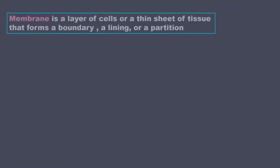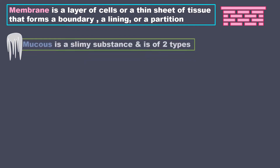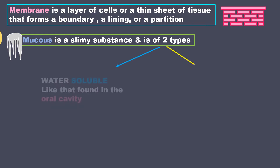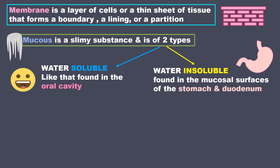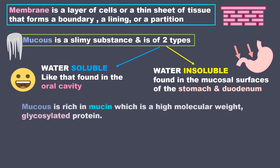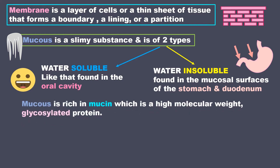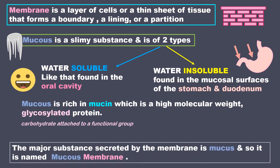A membrane is a layer of cells or a thin sheet of tissue that forms a boundary, a lining, or a partition. Mucus is a slimy substance and is of two types: water soluble, like that found in the oral cavity, and water insoluble, found in the mucosal surfaces of the stomach and duodenum. Mucus is rich in mucin, which is a high molecular weight glycosylated protein — meaning it has a carbohydrate attached to a functional group. The major substance secreted by the membrane is mucus, and so it is called a mucus membrane.